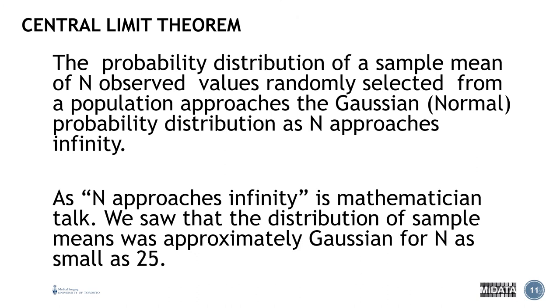So what does all this mean? Well the probability distribution of a sample mean of n observed values randomly selected from a population approaches the Gaussian or normal probability distribution as n approaches infinity. In our case we went from 5 to 10 to 25 but we could have continued to infinity and if we had we would have approached the normal curve.